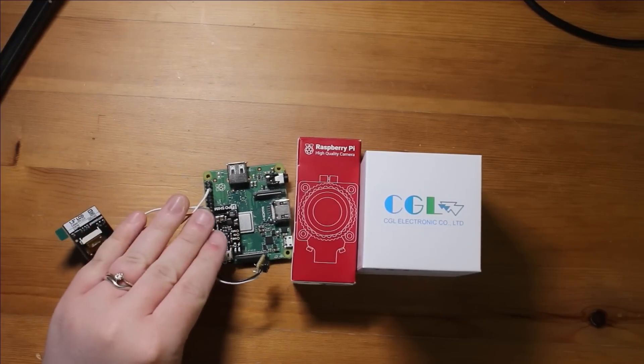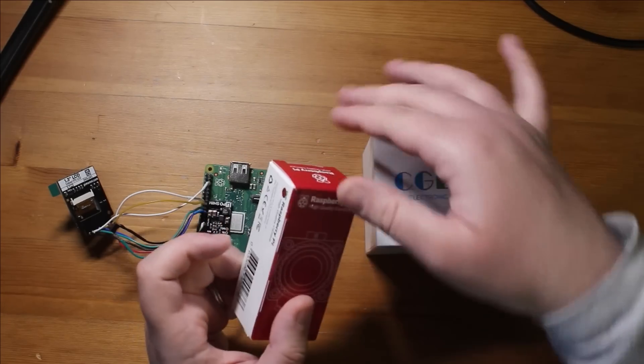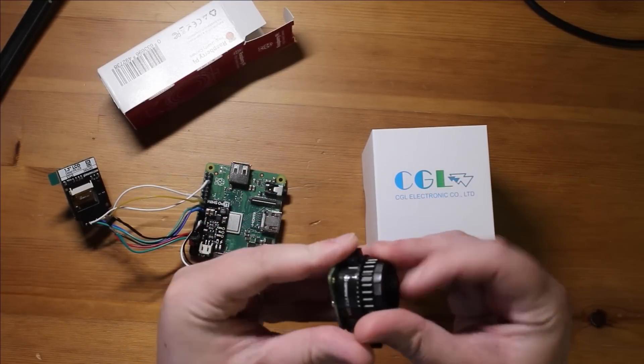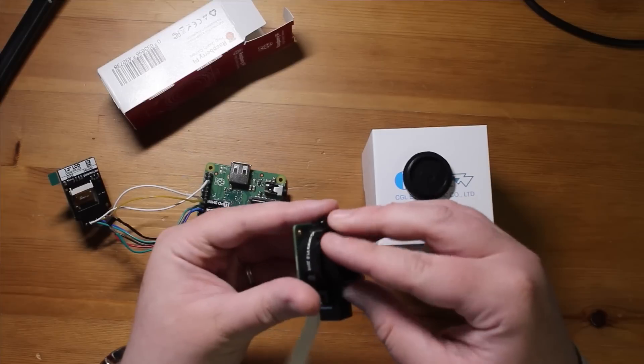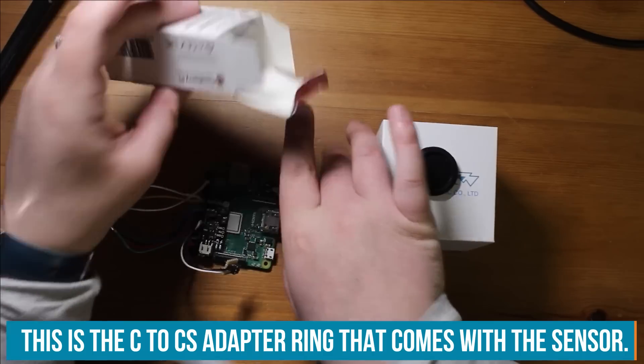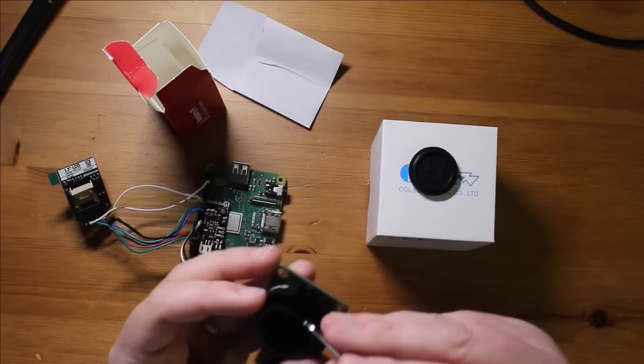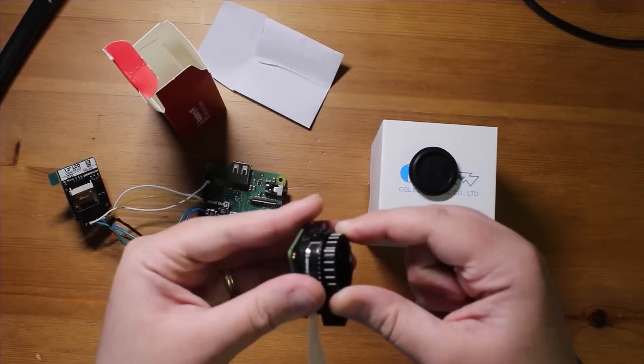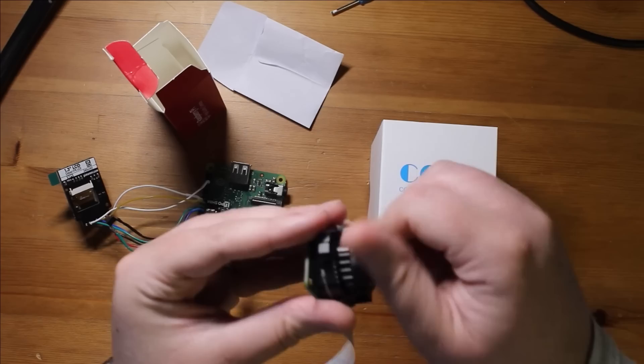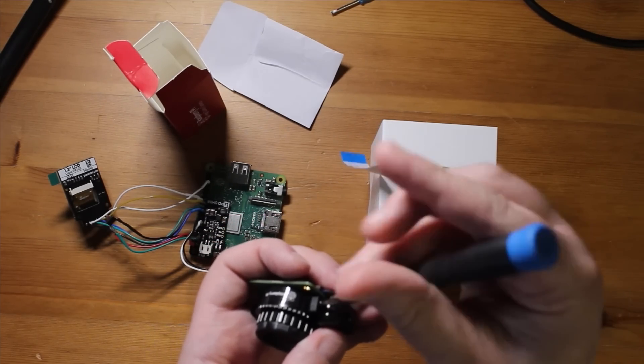Before we can program our Pi to be a camera, we need to attach the camera to it. So we've got the high quality camera sensor, which is this board. Now it comes with a C to CS adapter ring for our 16mm telephoto lens. We need that on. And there is a locking screw here that we can do up with the included screwdriver, which means that the adapter won't come loose. So now that's locked on with the adapter we need.